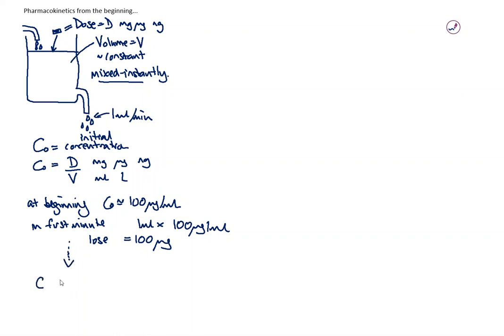Fast forward to when the concentration is now 20 micrograms per mil. At this time, in one minute we'll lose a mil of lower concentration—20 micrograms per mil, which is 20 micrograms. At the start we lost 100 micrograms per minute, but later when concentration is lower, only 20 micrograms per minute.